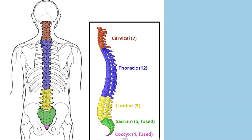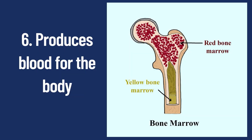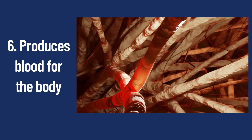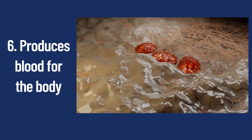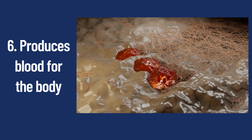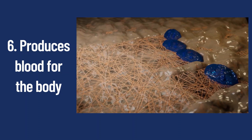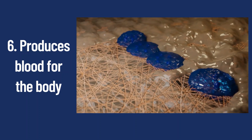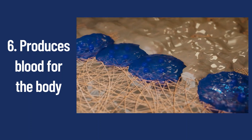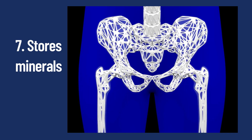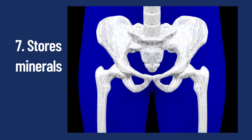There are cervical, thoracic, lumbar, sacrum, and coccyx regions — these are the names of our vertebrae. Number 6: it produces blood for the body. This video shows how red blood cells are produced by our bones. Number 7: it stores minerals. All our bones store minerals.